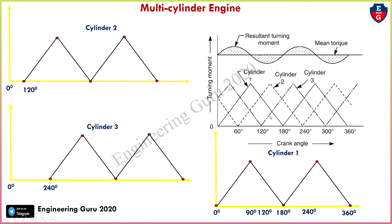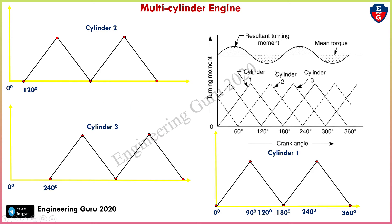Now understand how to draw the resultant turning moment diagram for a multi-cylinder engine. The first cylinder is drawn from zero angle — maximum, minimum, and again maximum and minimum. Then draw the second cylinder, and then the third. If we extend to 120 degrees, we draw that line, and at 240 degrees we extend that line to complete the diagram.